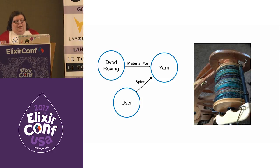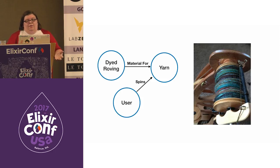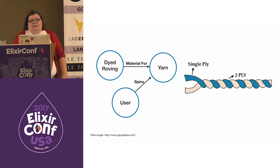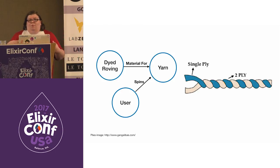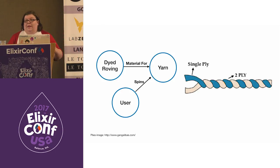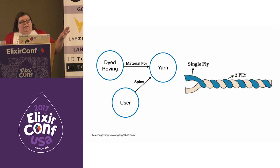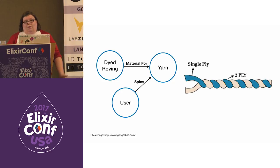Similarly, dyed roving is material for the yarn. We're reusing the 'material for' relationship several times. There are lots of ways to spin yarn, including spinning wheels and drop spindles. Spun yarn is made up of one or more plies of roving spun one direction, and then you spin them together again. You can make multiple plies, or the yarn can be spun upon itself, or used as a single ply.